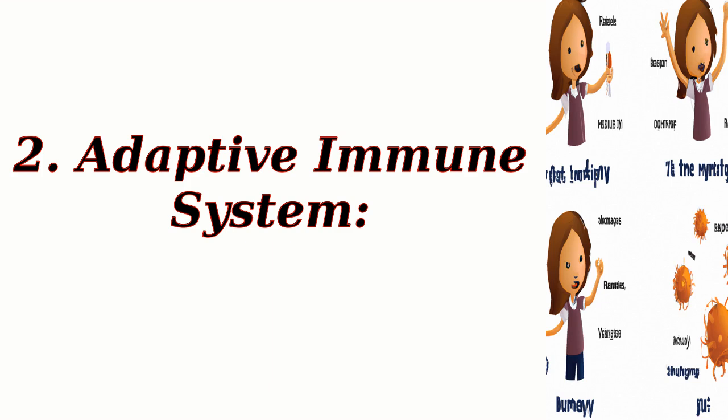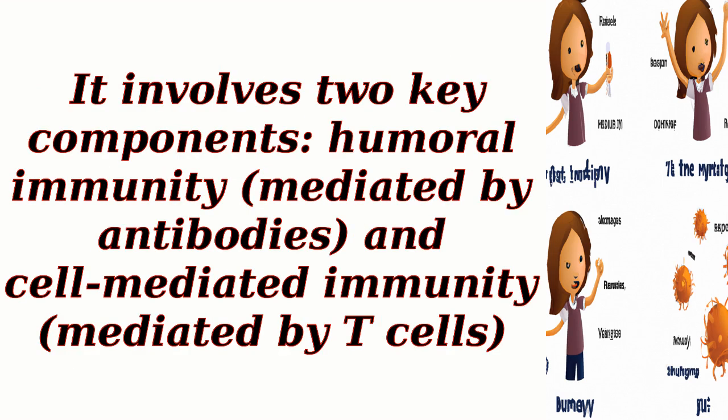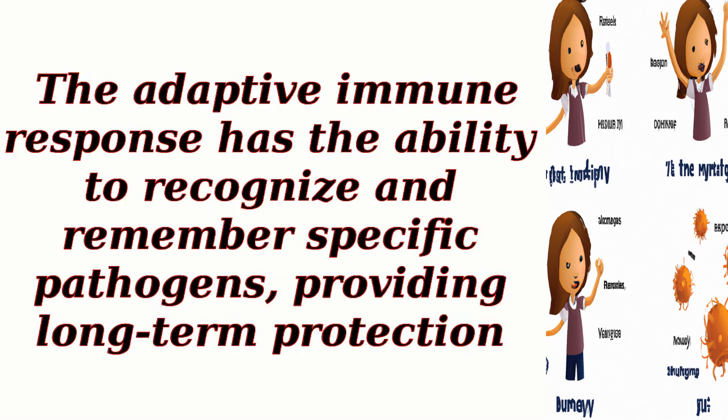The adaptive immune system is a more specialized and targeted defense mechanism that develops after exposure to specific pathogens. It involves two key components: humoral immunity, mediated by antibodies, and cell-mediated immunity, mediated by T-cells. The adaptive immune response has the ability to recognize and remember specific pathogens, providing long-term protection.